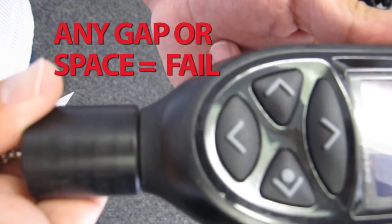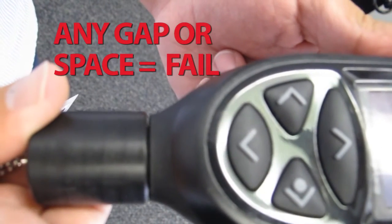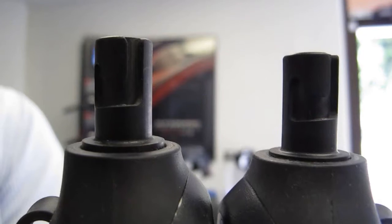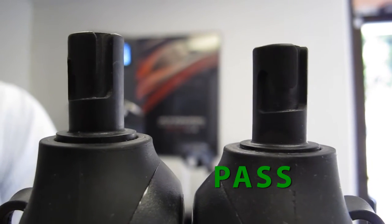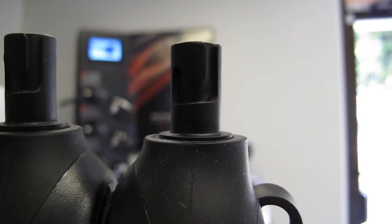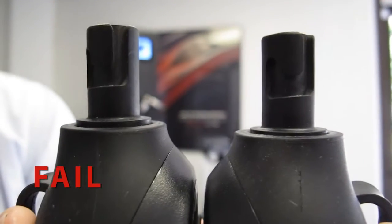If there is any space between the tool and the Cobalt, it is considered a fail. If there is any doubt, contact Atomic Aquatics. Sometimes there is a fine line between a passing Cobalt and one that fails inspection.